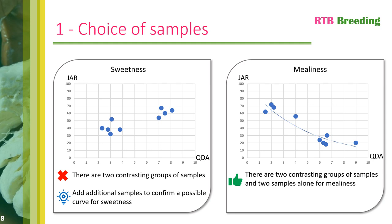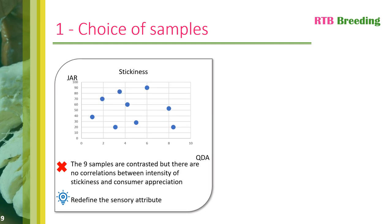The next example is for the milliness attribute. Here we can see that some of the samples are similar because they are grouped together on the graph, but despite that there are still several samples which are quite contrasting, making it possible to obtain four different points and therefore draw a curve. For stickiness, you can see that the points are scattered all over the graph. It's therefore impossible to interpret these results, as there is no correlation between stickiness intensity and consumer appreciation. When this kind of result is obtained, there can be two main reasons: either there really is no link between stickiness and consumer preference, or the sticky descriptor is poorly understood by consumers and therefore poorly interpreted and rated — there is a lack of consensus.